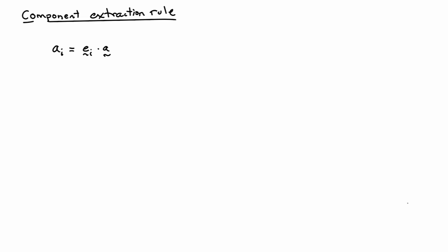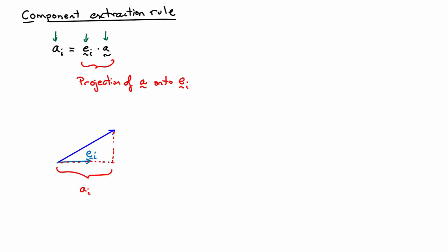One important manipulation to know is the component extraction rule. If I take a vector a and take its dot product with any basis vector ei (where i can be one, two, or three), that gives me the component in that direction — this is the component extraction rule. Geometrically, ei · a is just the orthogonal projection of a onto ei, giving me the component ai.